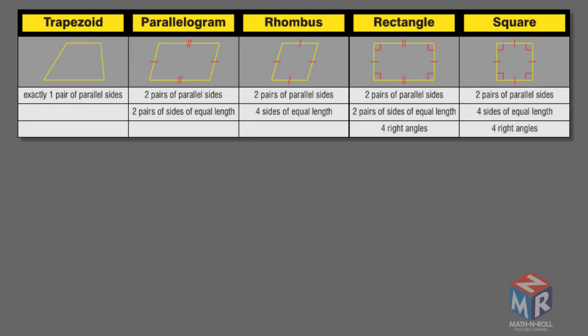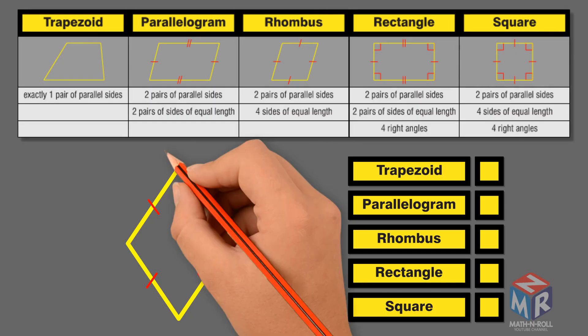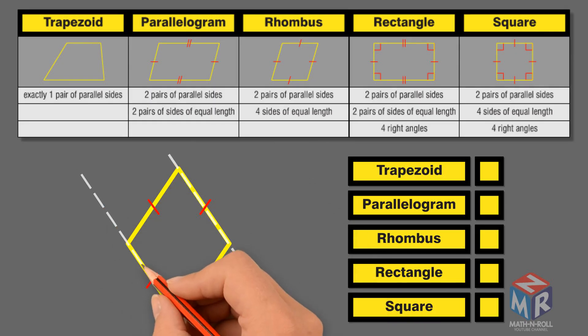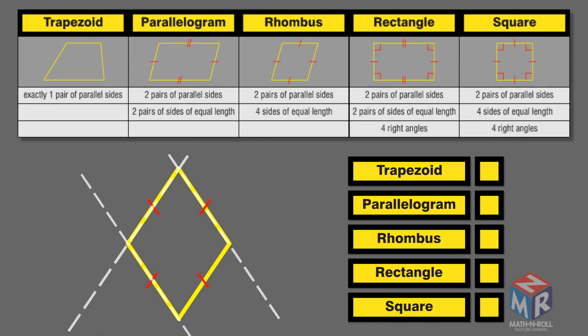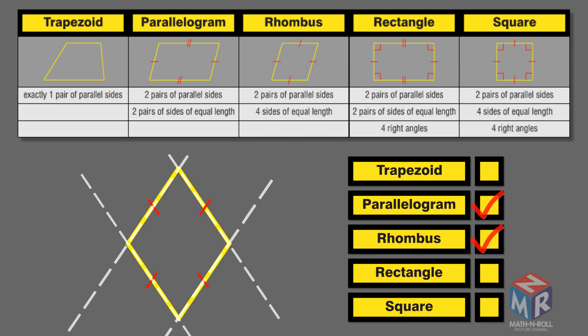Let's take a look at this quadrilateral. It is not a trapezoid because it has two pairs of parallel sides. It is a parallelogram because it has two pairs of parallel sides and two pairs of sides of equal length. It is also a rhombus because it has two pairs of parallel sides and four sides of equal length. It is not a rectangle or a square because it does not have four right angles.